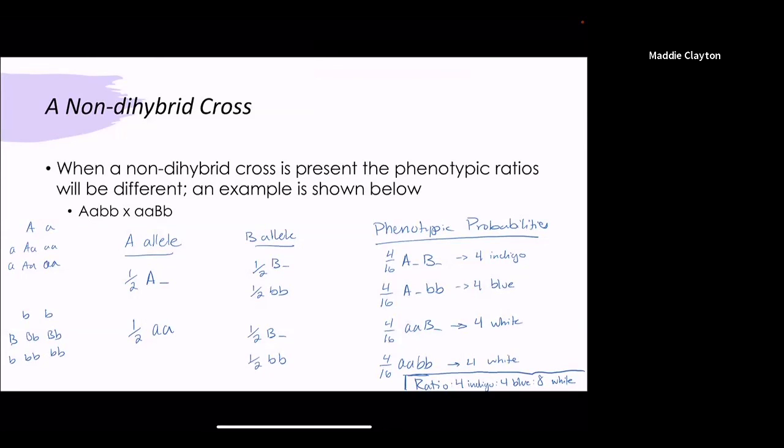This being said you then have four indigo four blue but you have eight white. So your ratio then becomes 4:4:8 making it very different than what we saw with the dihybrid cross.